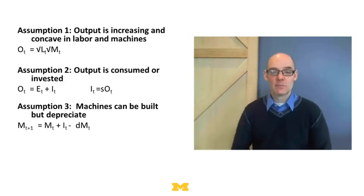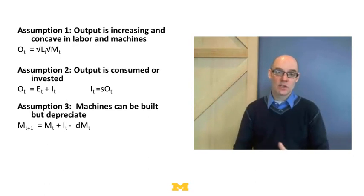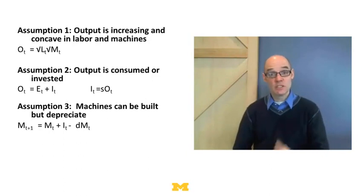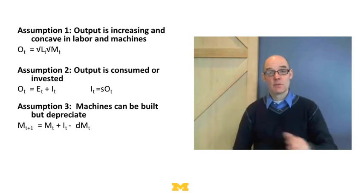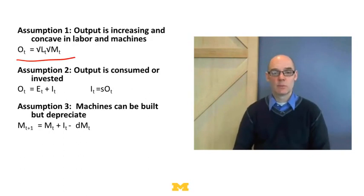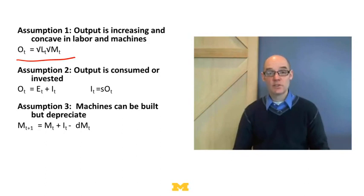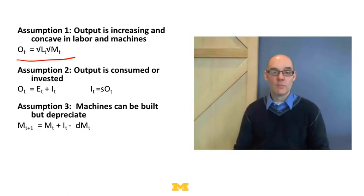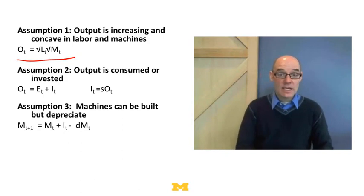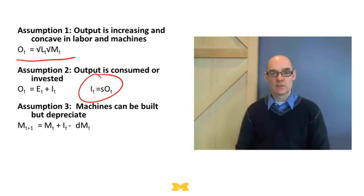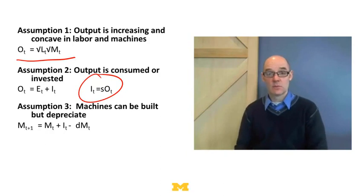Now we need to make some assumptions. The first assumption is that the production of coconuts is increasing but concave — we had concave functions going up and falling off in both workers and machines. More machines means more coconuts, more workers means more coconuts, but those things fall off. We're going to use a specific functional form: the square root of the laborers times the square root of the number of machines. Second assumption: output is either consumed or turned into machines — the coconuts are either eaten or turned into coconut-picking machines, no waste. So output O equals E plus I. Another way to write this: I equals S times O, because S is the savings rate and O is total output, so the amount we invest equals our savings rate times output.